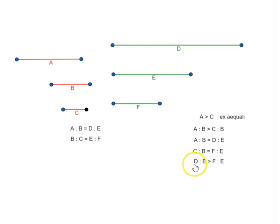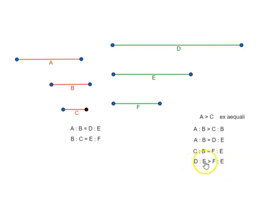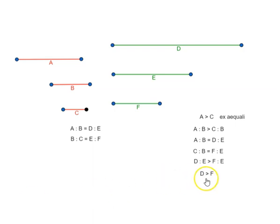Now remember, we have magnitudes D and F being compared to the same magnitude E. If D is to E is greater than F is to E, that means D is greater than F. Again using proposition 5.10 — so D is greater than F.